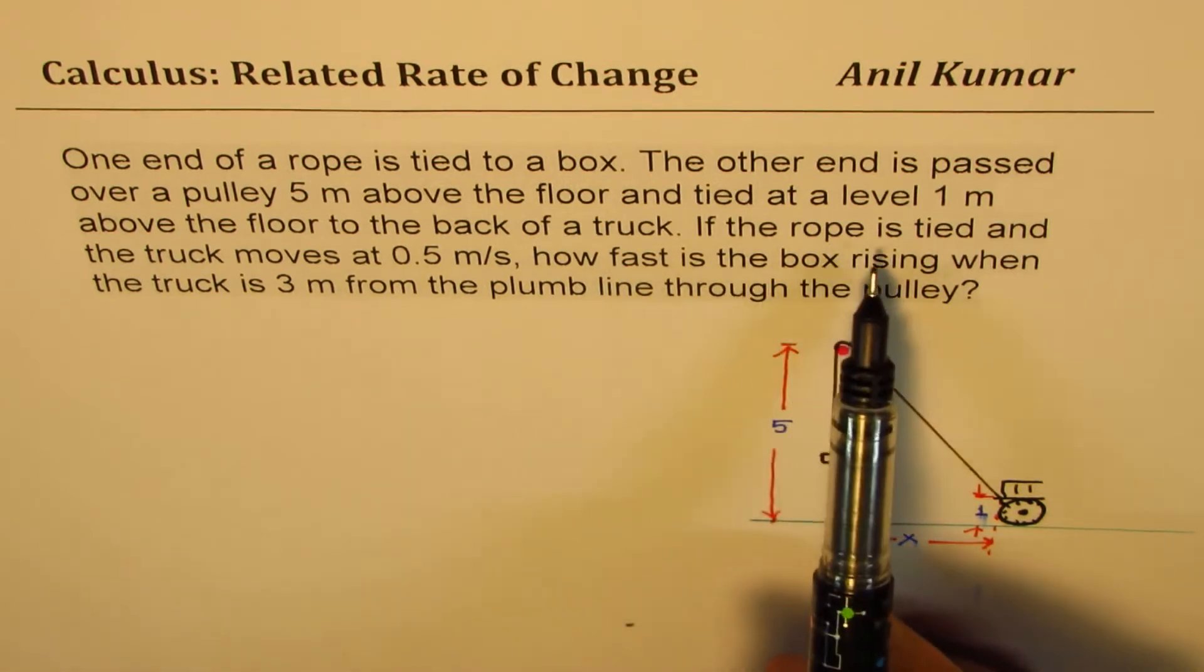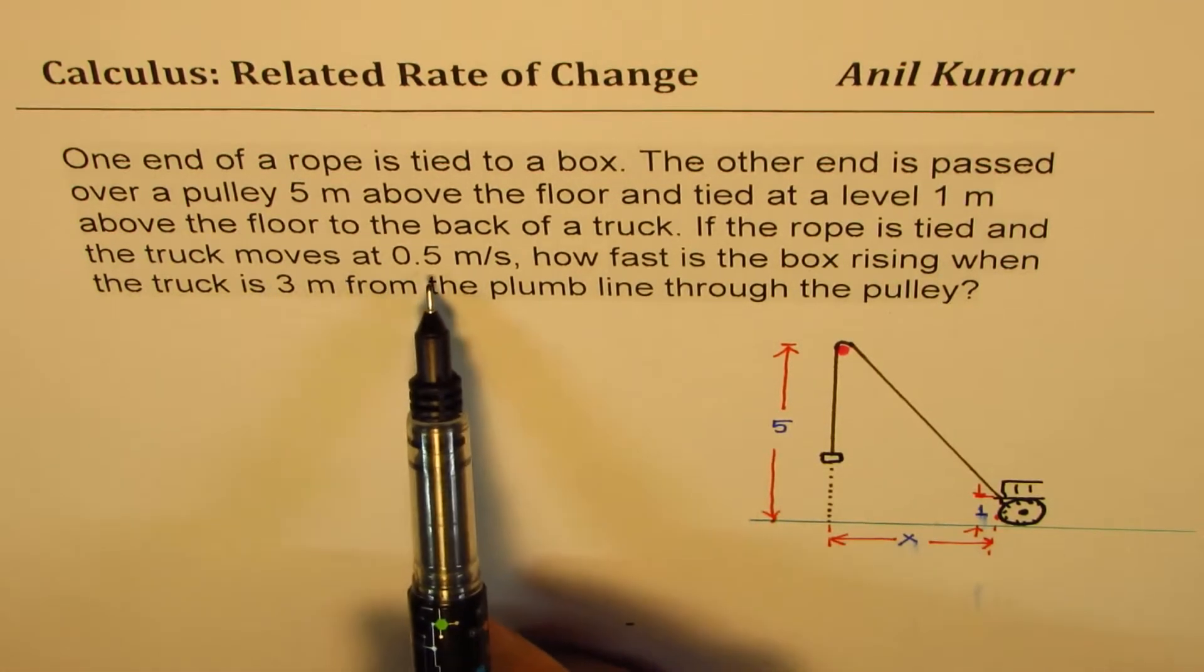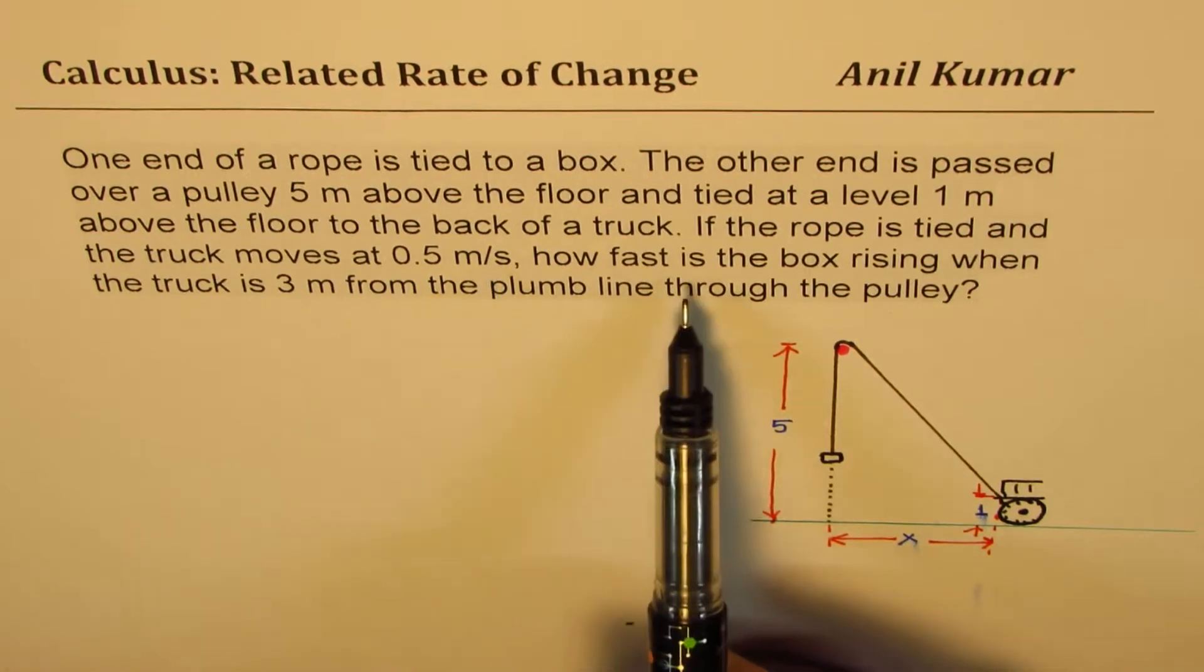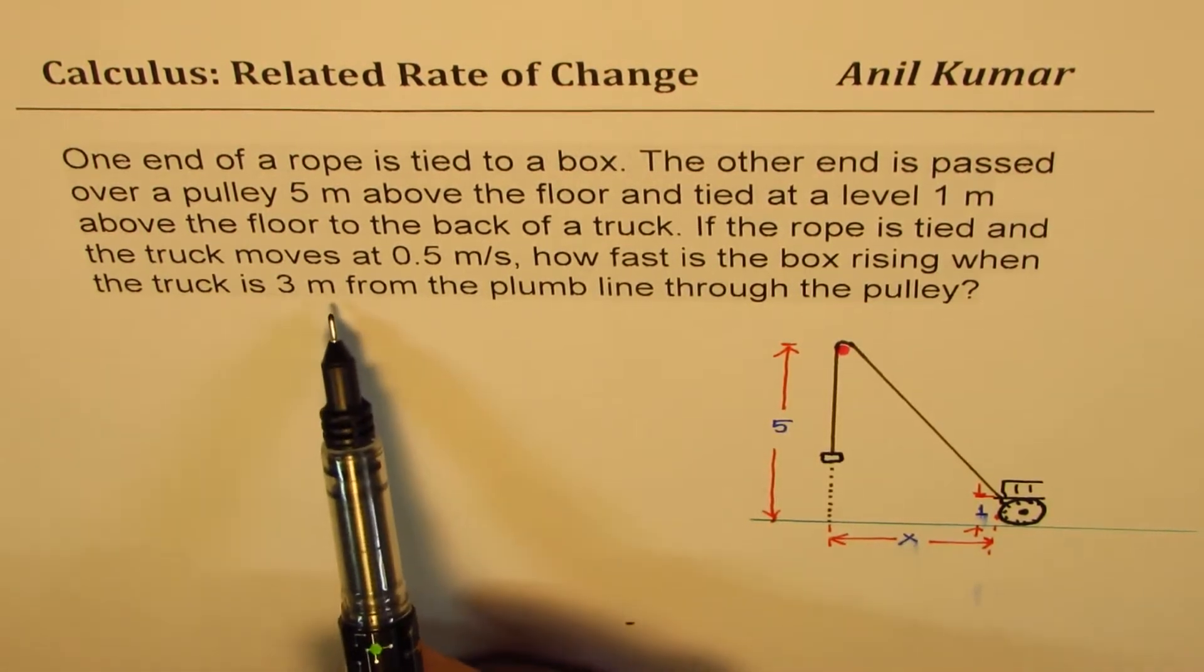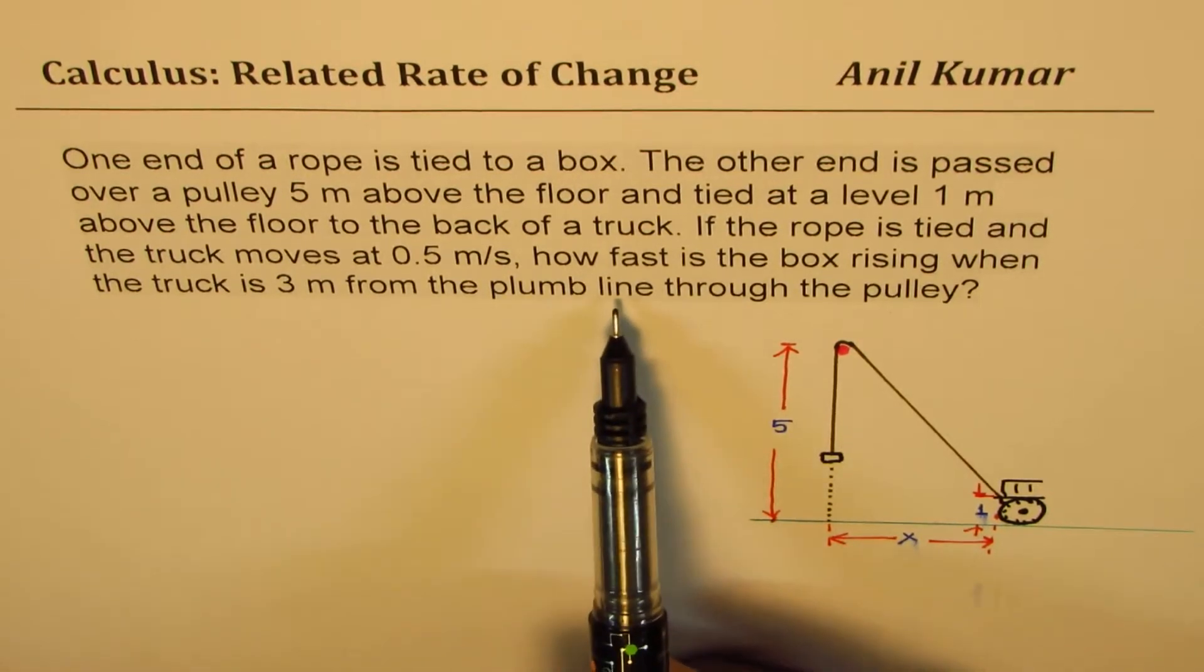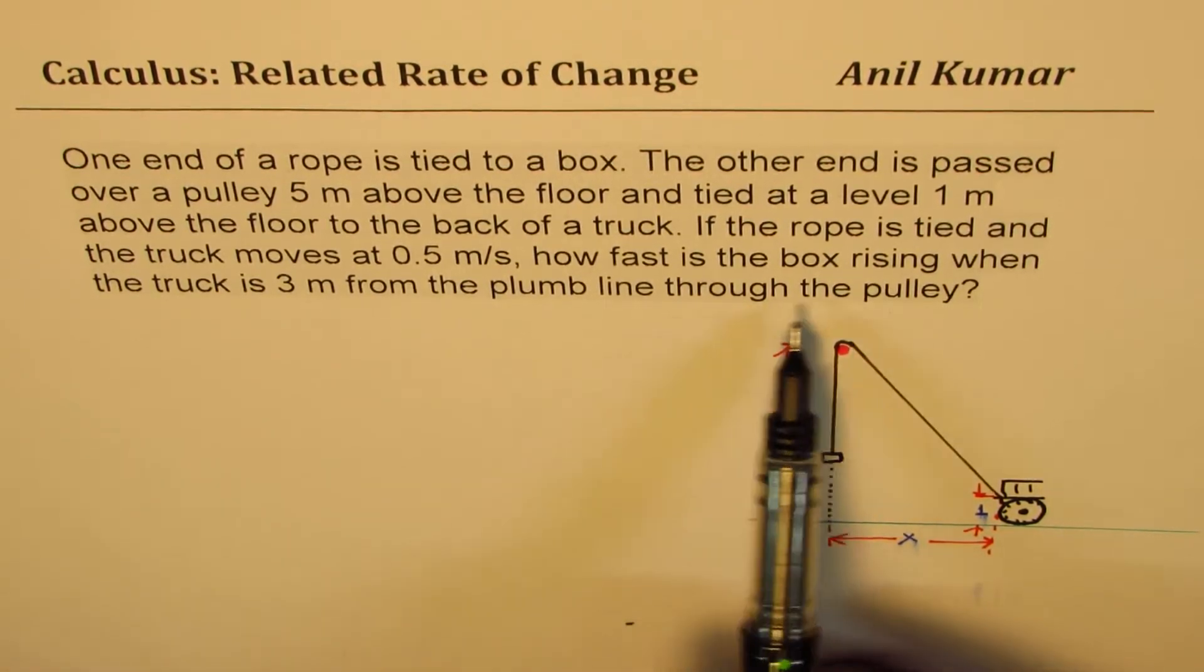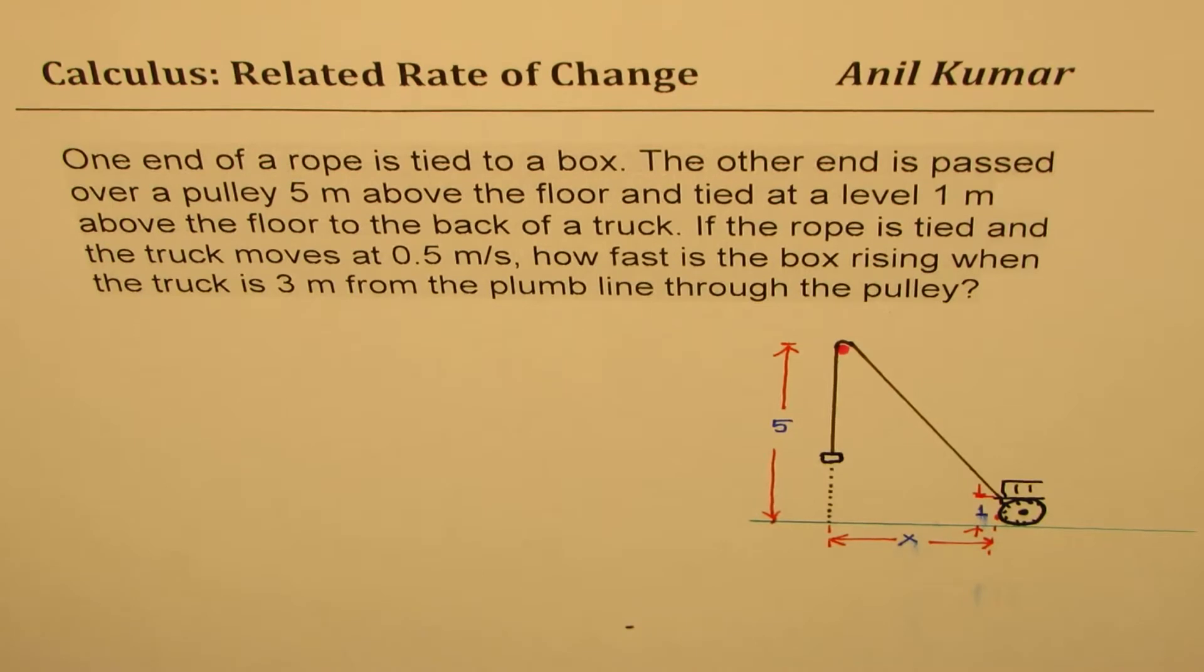If the rope is tied and the truck moves at 0.5 meters per second, how fast is the box rising when the truck is 3 meters from the plumb line through the pulley? So that's the question for you.